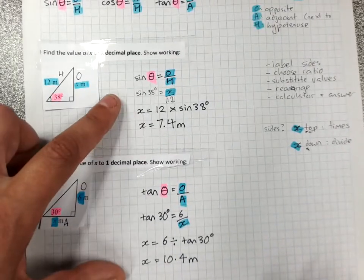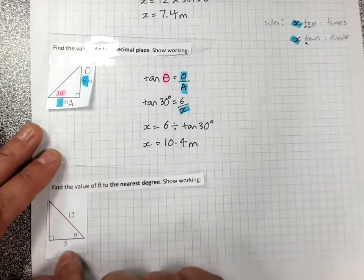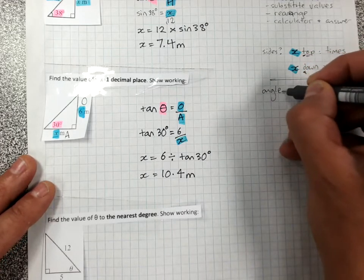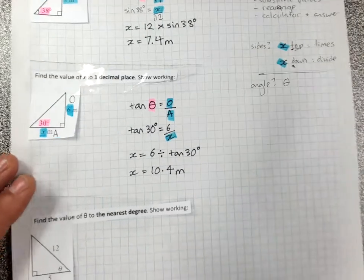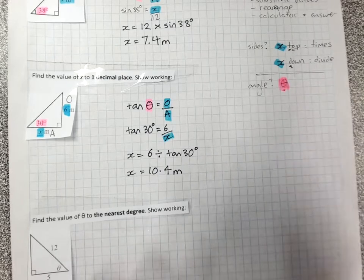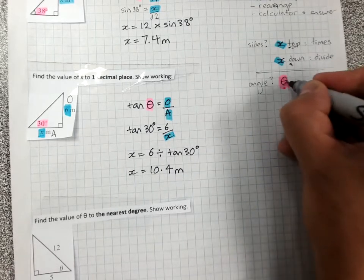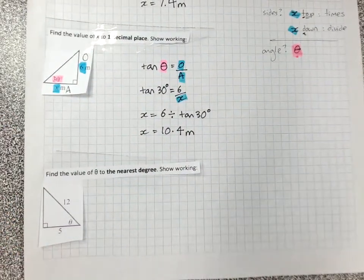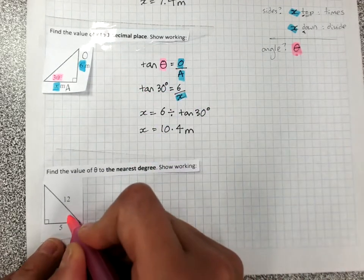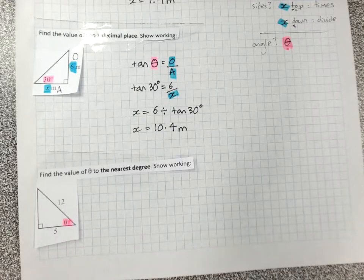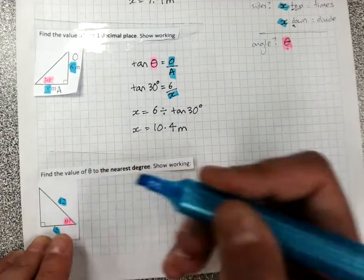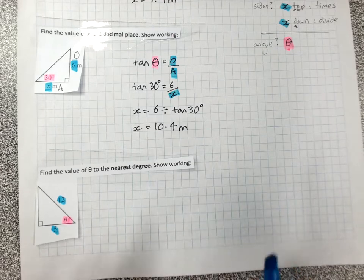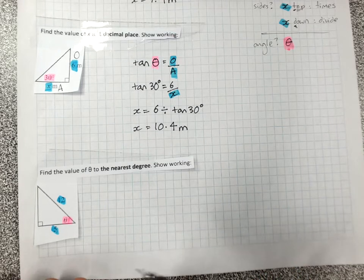Now, that was finding sides. The other thing we might have to find is theta. The angle. So if we're finding an angle, we'll be finding theta. And that's going to be pink. This has a slightly different thing, but we still follow the steps. So, we're still going to get our highlighters out. Pink angle. Blue sides. Now, look at that. The angle is the unknown. That tells us something's going to be different. But we still follow the steps. We still label the sides.